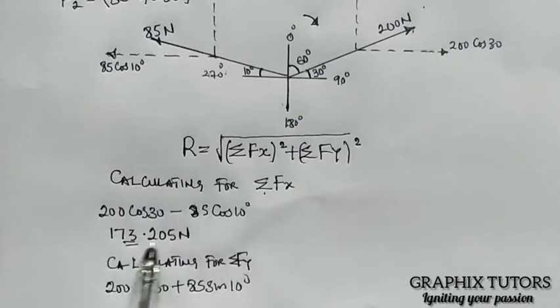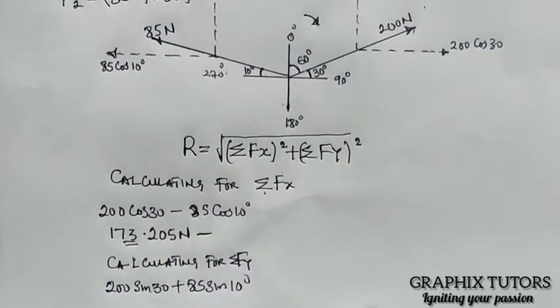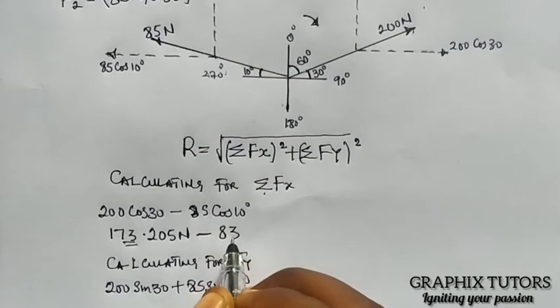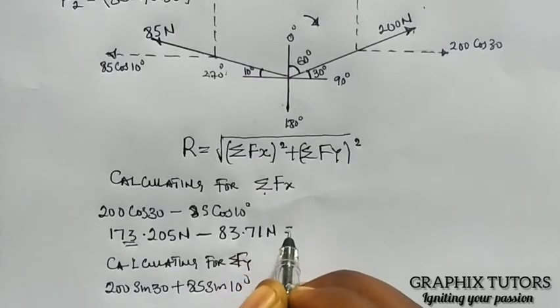Now, if you look at it, I did not complete this. So minus 85 cos 10 will give me 83.71 Newton.